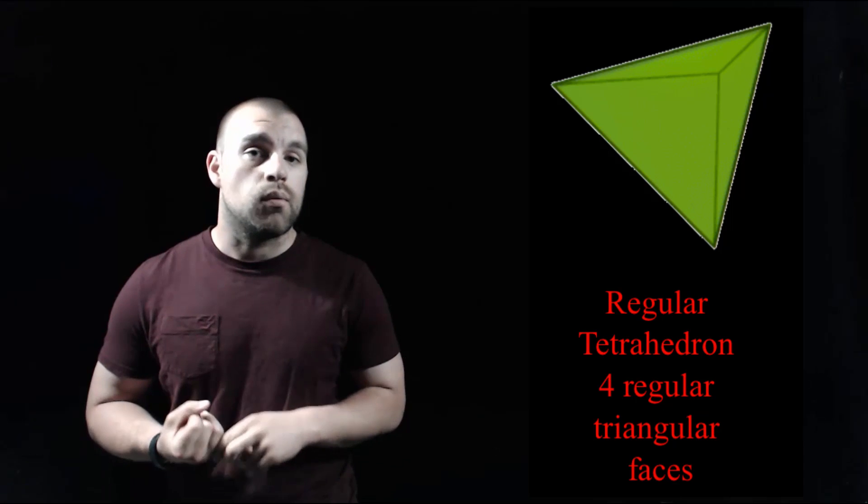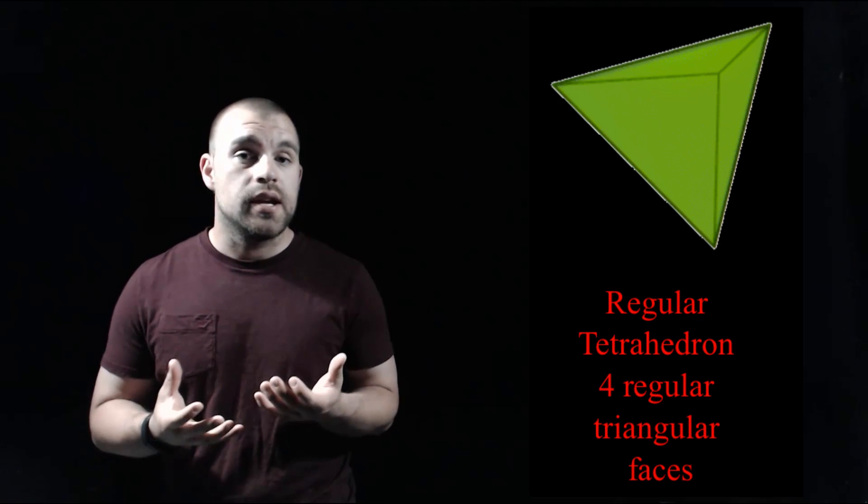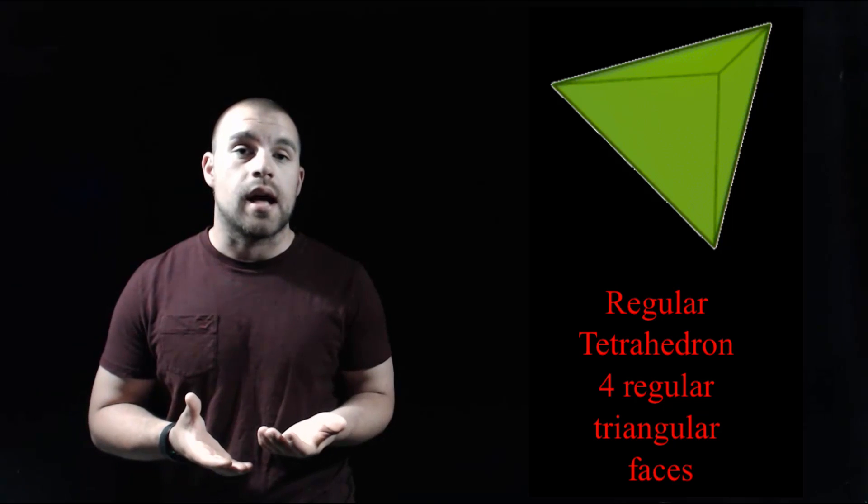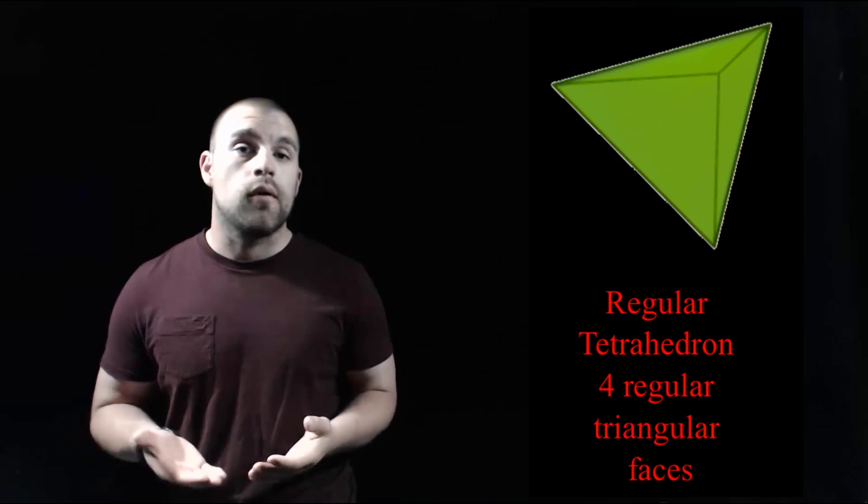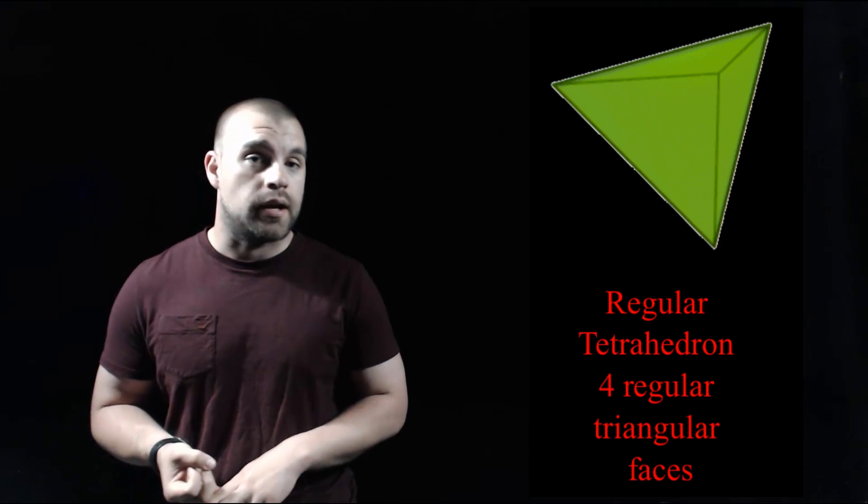The first one is called a regular tetrahedron. A regular tetrahedron is a three-dimensional solid that has four faces and all four of those faces are congruent regular triangles.